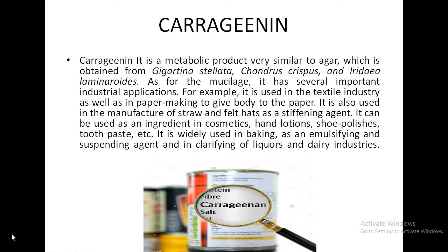Carrageenan is obtained from the cell wall of Chondrus crispus (Irish moss) and Gigartina stellata. In the Philippines, Eucheuma is commercially cultured as a source of carrageenan. Carrageenan is extensively used in stabilization of emulsions in paints and cosmetics, and in the alcohol and sugar industry it is used as a clearing agent.